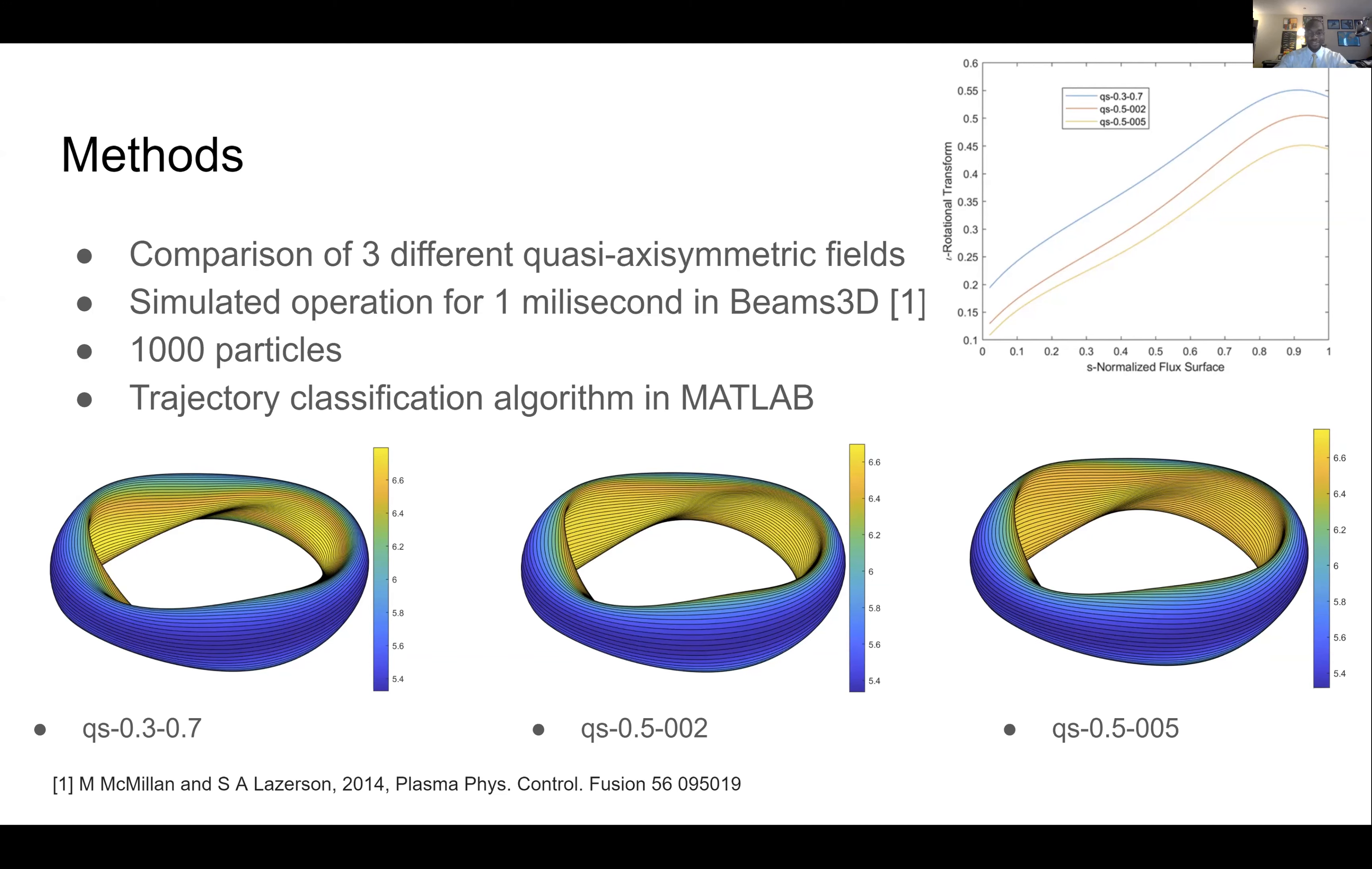Now, you might be looking at these plots and thinking, okay, these look pretty similar. But there are actually some subtle differences. Those subtle differences lie in rotational transform. Rotational transform is an indication of how much the field twists. And the twist across each of these fields decreases from left to right.